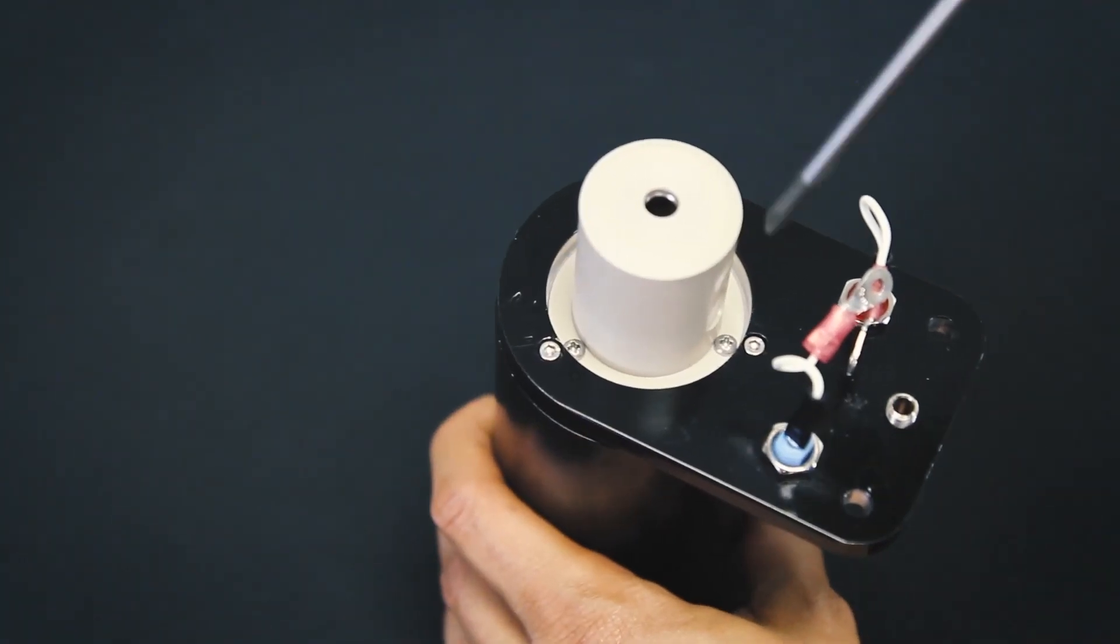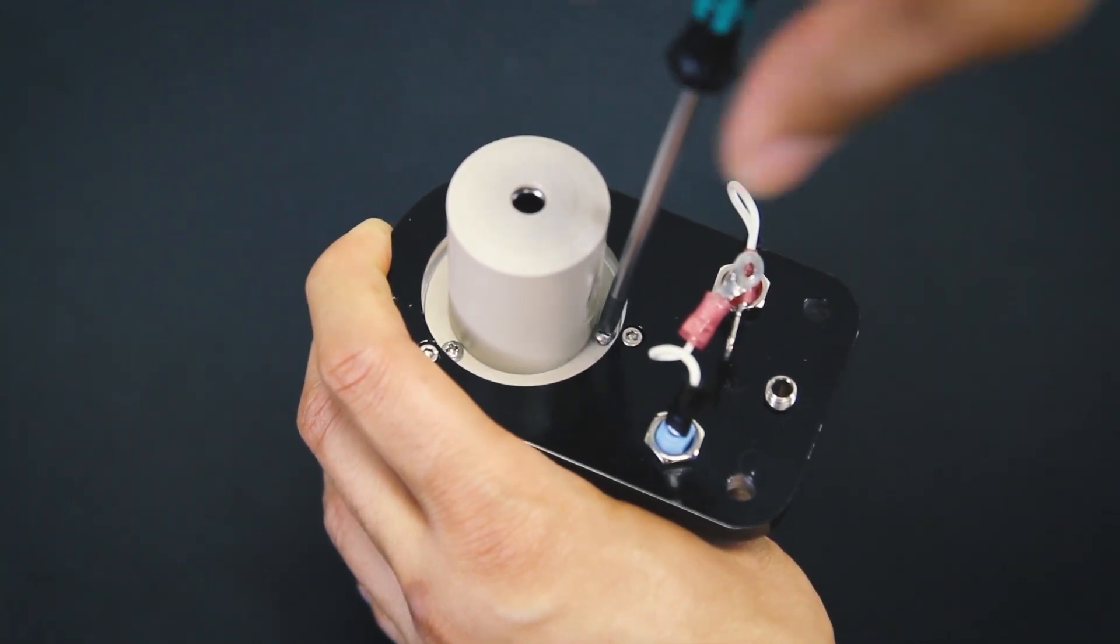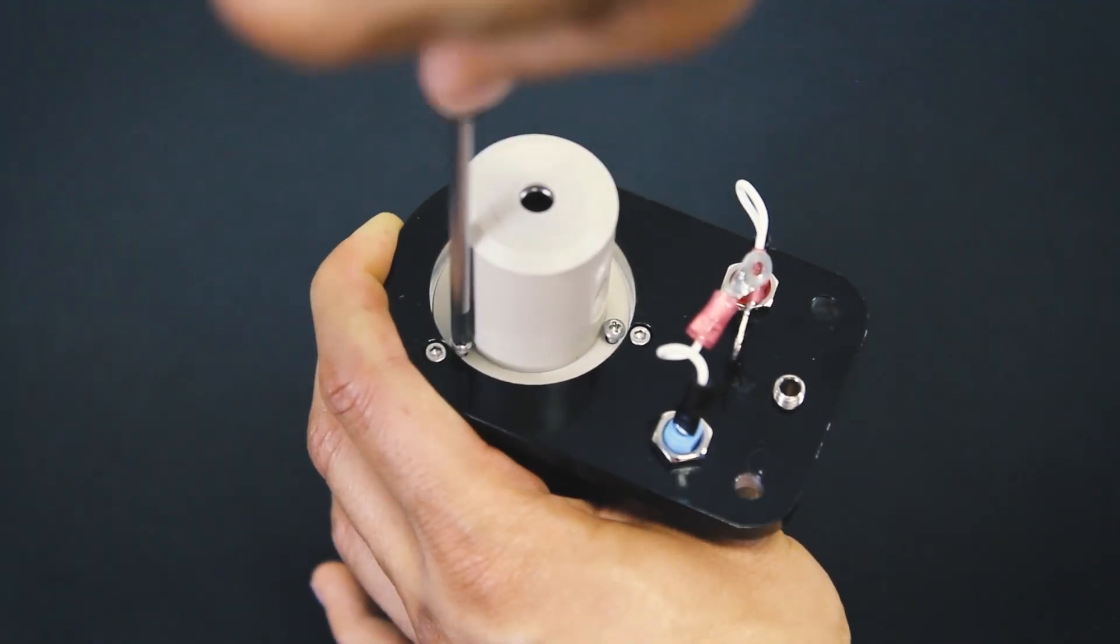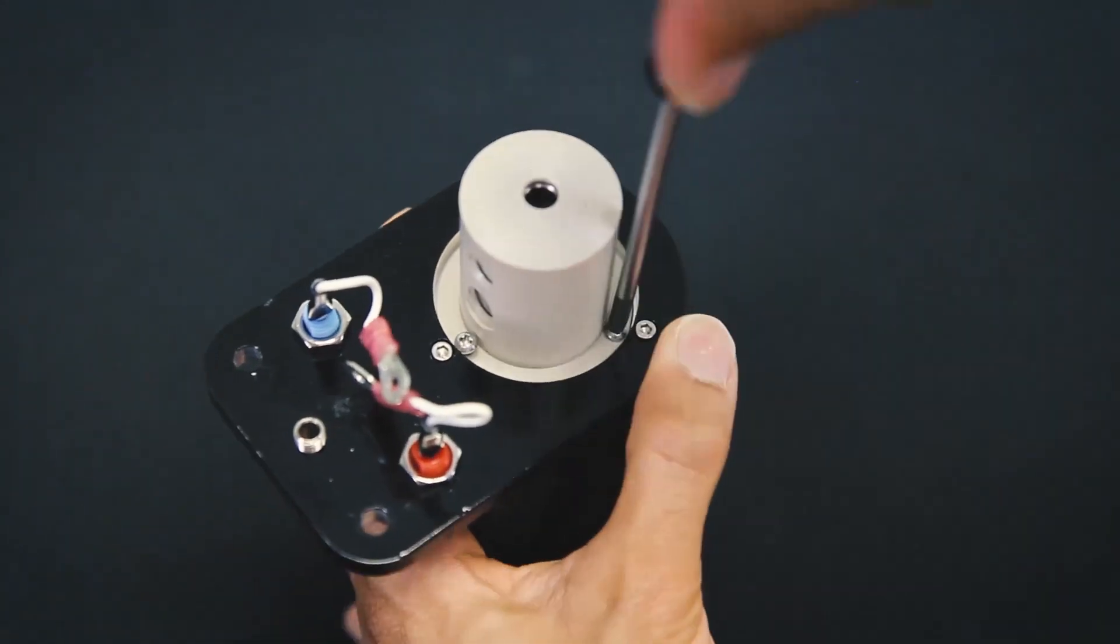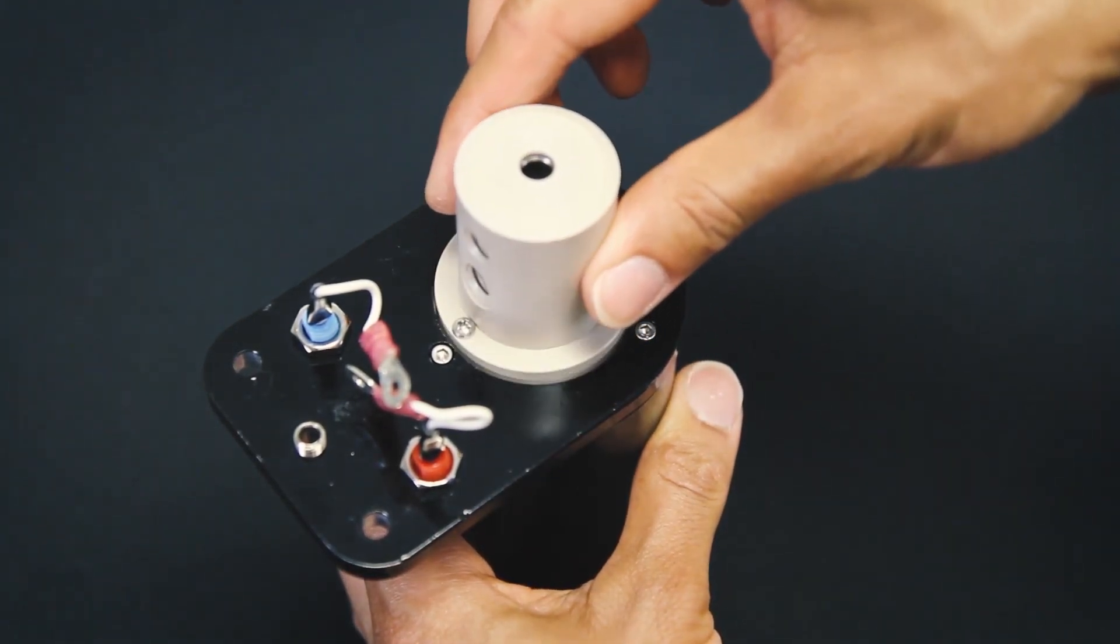On the bearing assembly, remove the three inner screws using your small Phillips head screwdriver. Once removed, you can pull the bearing assembly out.